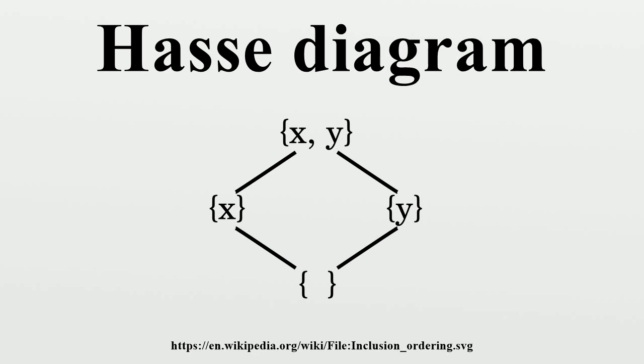Upward planarity: If a partial order can be drawn as a Hasse diagram in which no two edges cross, its covering graph is said to be upward planar.